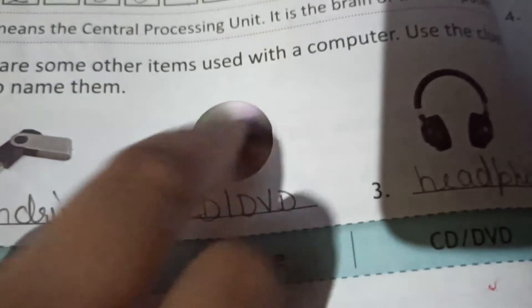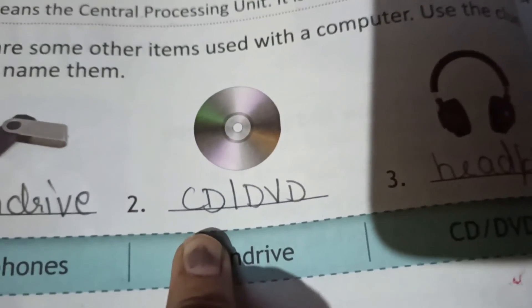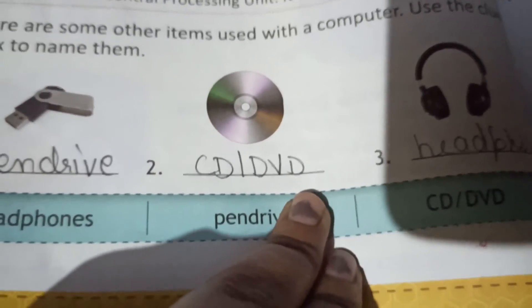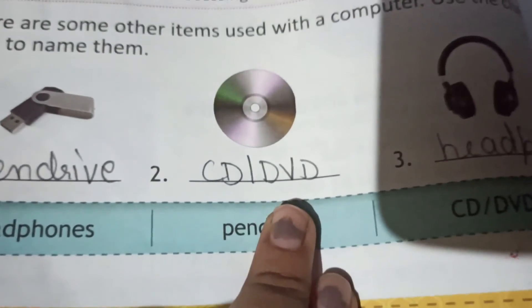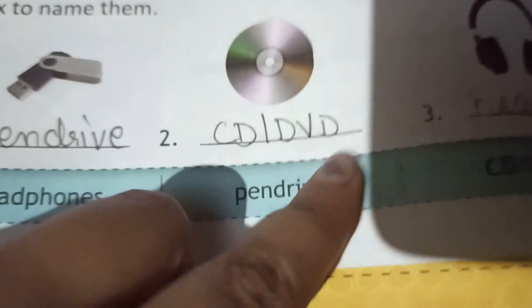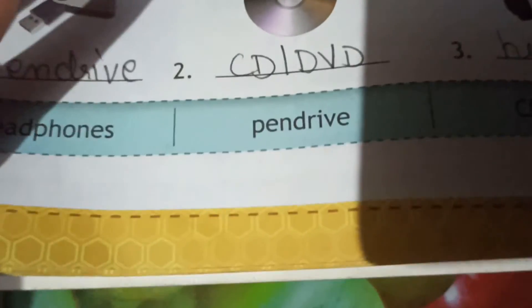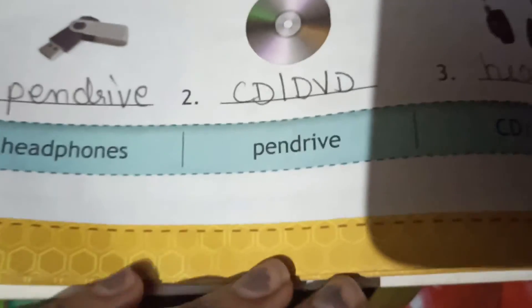The second one is, this is a CD, compact disc, या फिर DVD. CD और DVD दो चीज़ें होती हैं. CD में सिर्फ हम कम चीज़ें store कर सकते हैं और DVD में हम बहुत सारी चीज़ें store कर सकते हैं, यानि कि बहुत सारा data store कर सकते हैं. So CD और DVD.